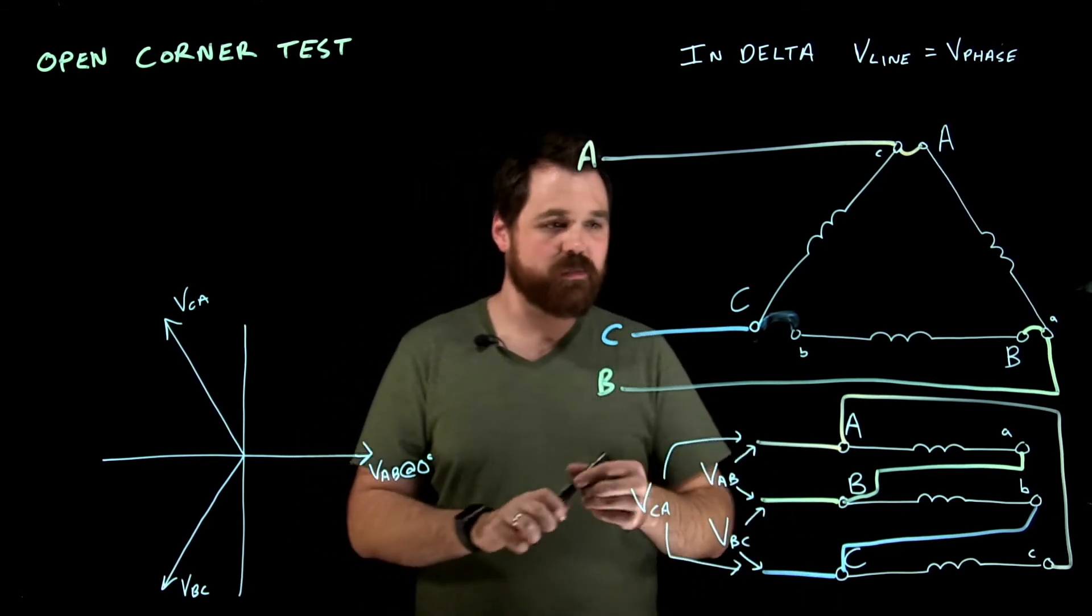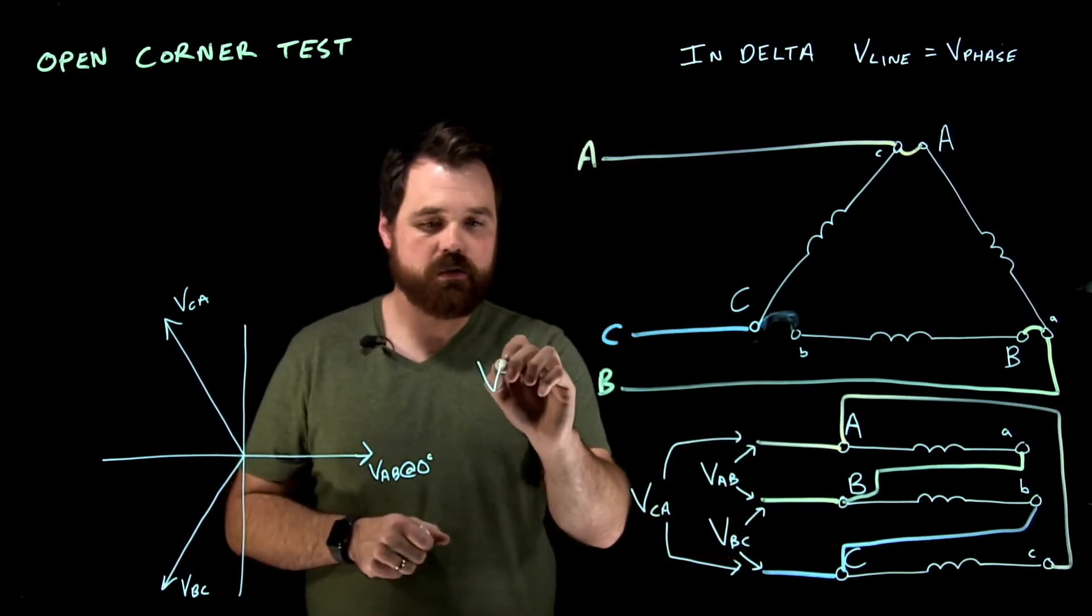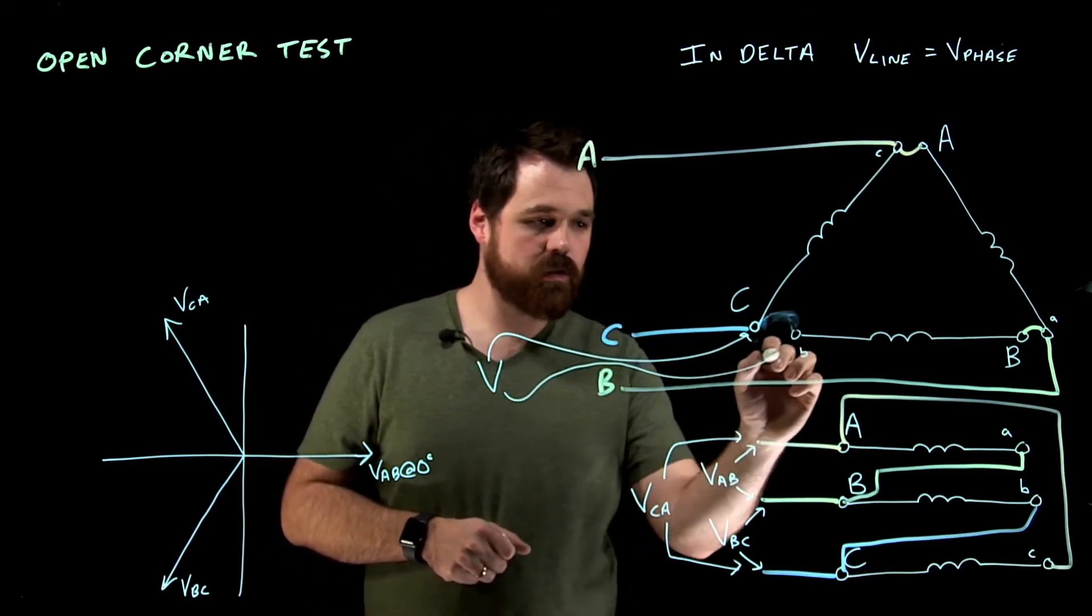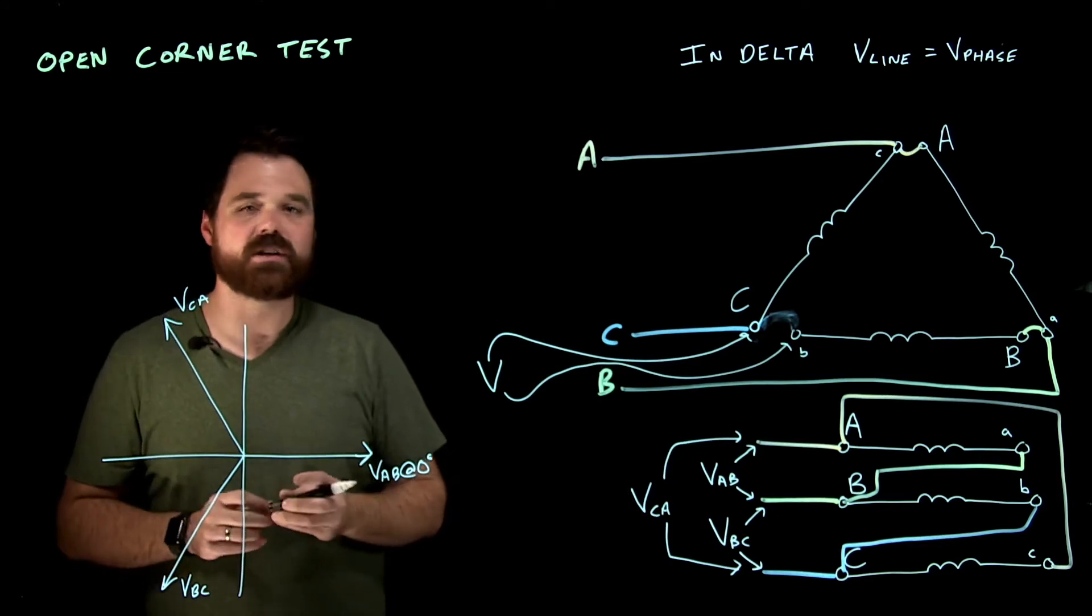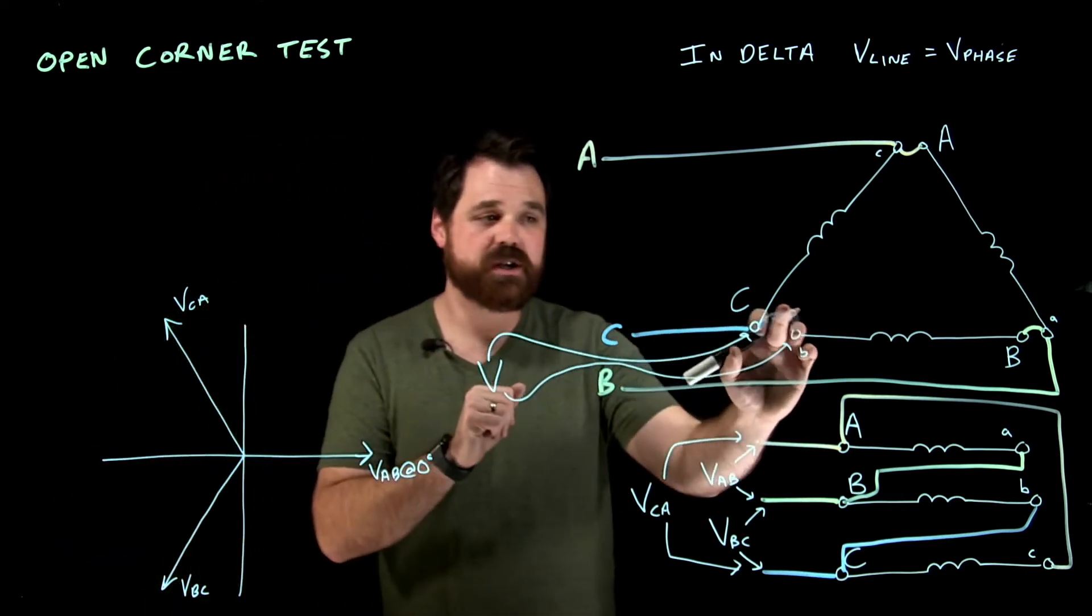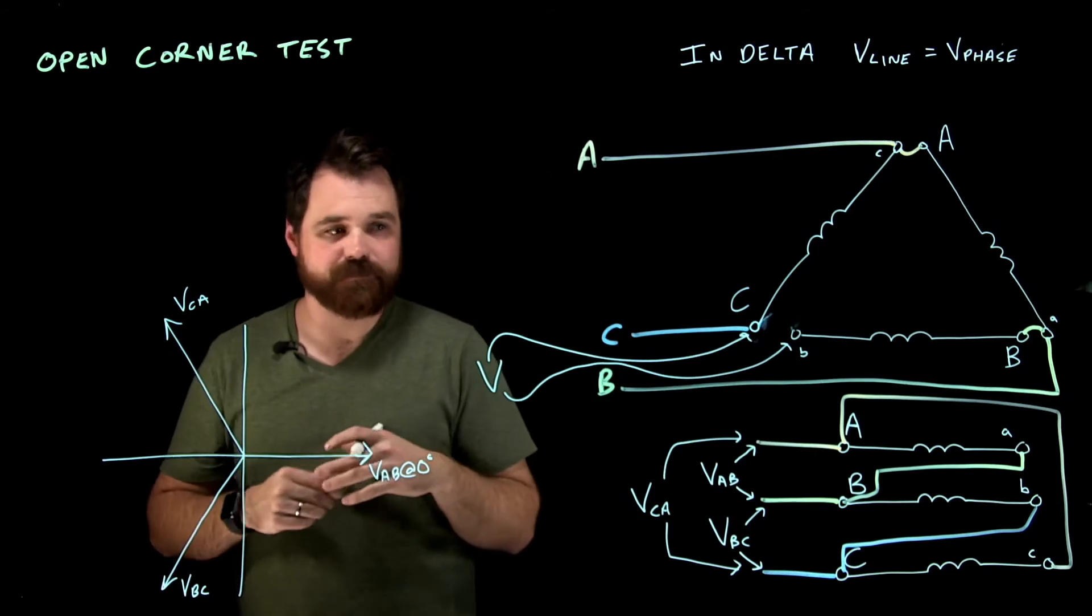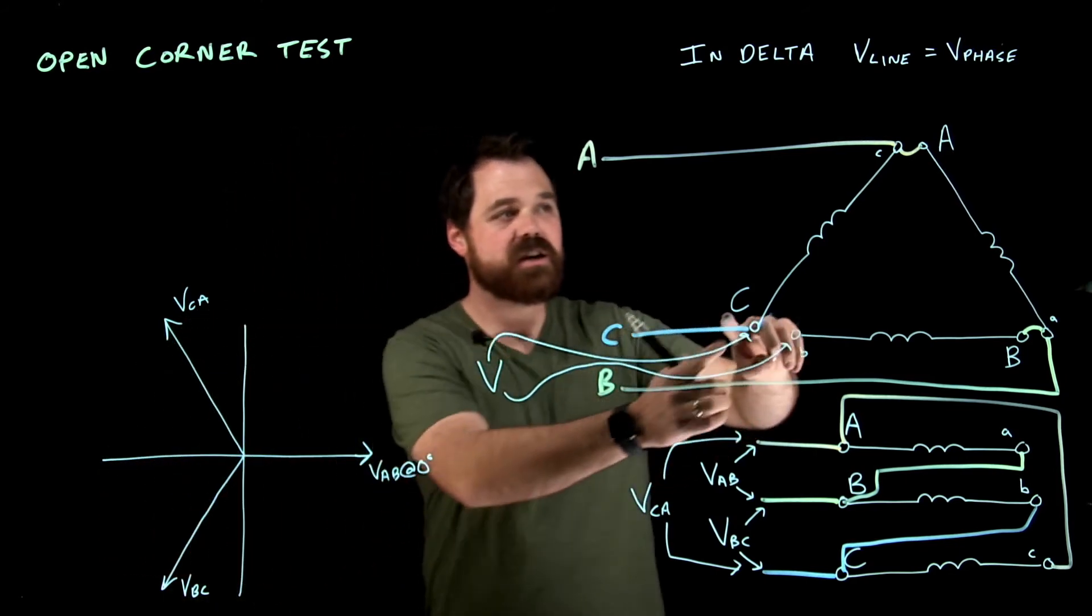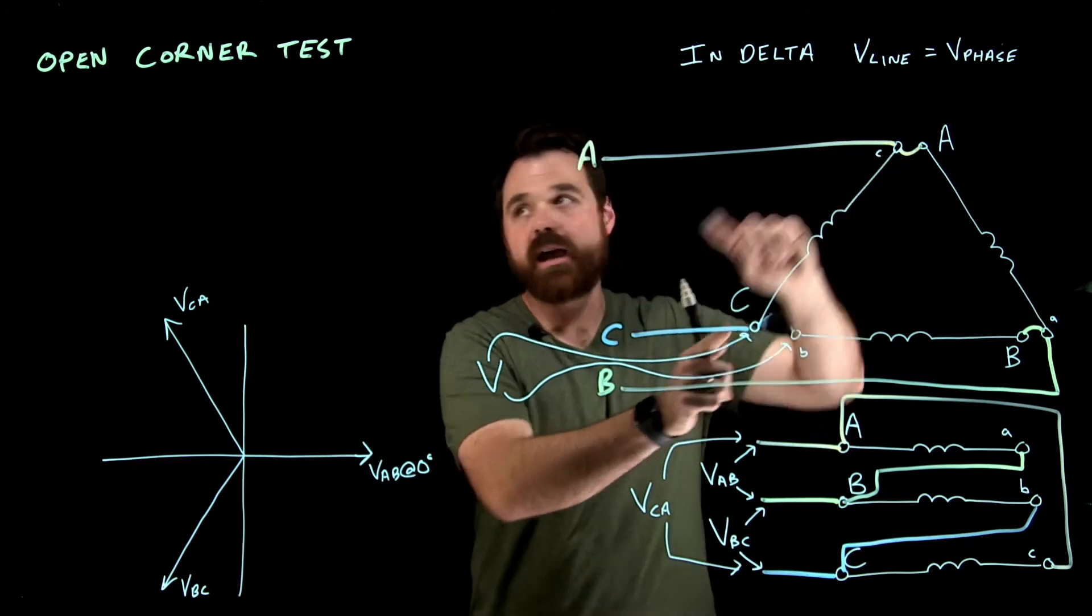So what I do is I take my voltmeter. I'm reading from there to there, which I know is kind of tough to see. This is called that open corner test. So before I make that connection, I energize it. Now, what you're actually reading is V or C to A.